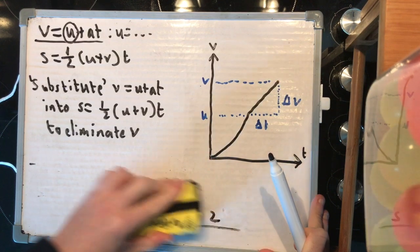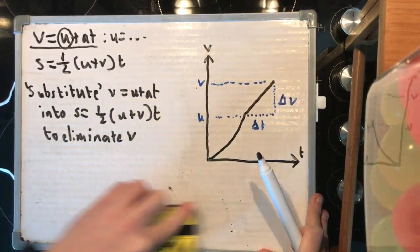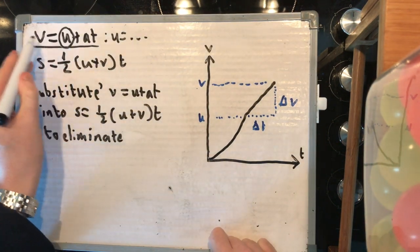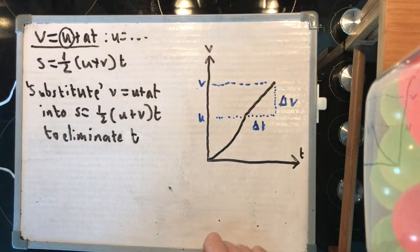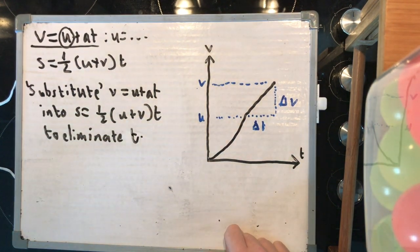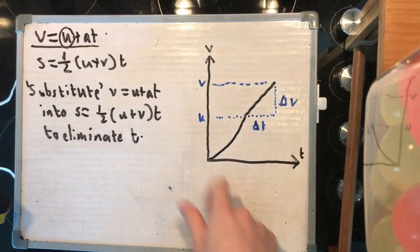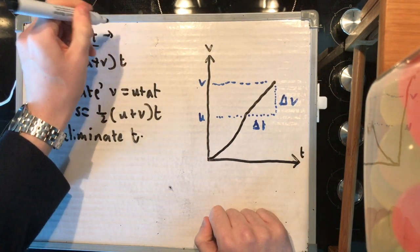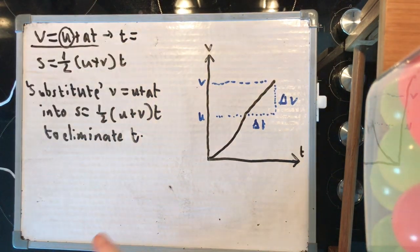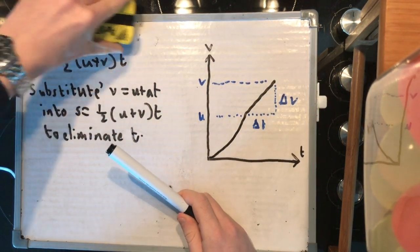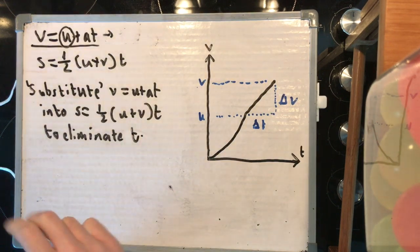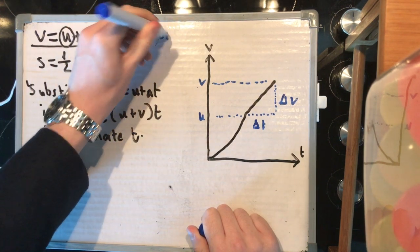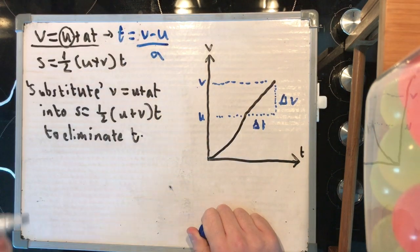Now, the last one is actually doing exactly the same thing, but instead of eliminating v, you've done u, I've done v, now we need to get rid of t, and this one's going to get messy. So, first off, we need to rearrange this equation, v equals u plus at to be in terms of t. So, t equals, we need to subtract u, v minus u, and then divide by a, v minus u over a. Now, let's put that in here.